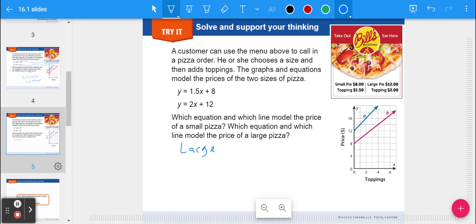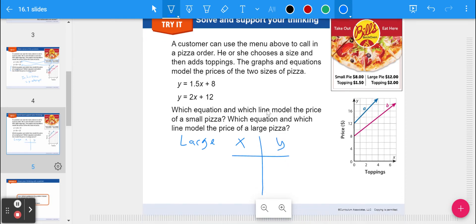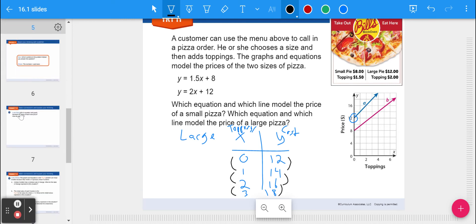If I make a table of X and Y, X is the number of toppings and Y is our cost. If I have zero toppings, I still have to pay twelve dollars. If I want one topping, I pay fourteen bucks. Two toppings, sixteen bucks. Three toppings, eighteen bucks. You can see this is linear not only because it's on the graph but because it's a constant increase for every one added topping.